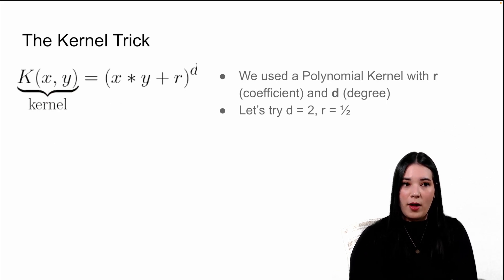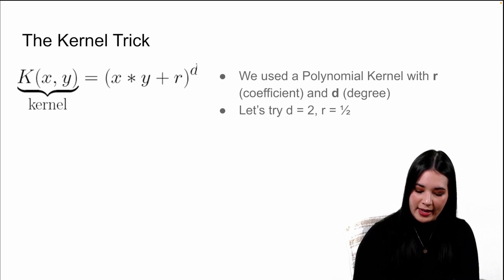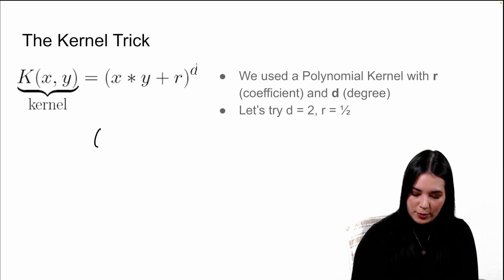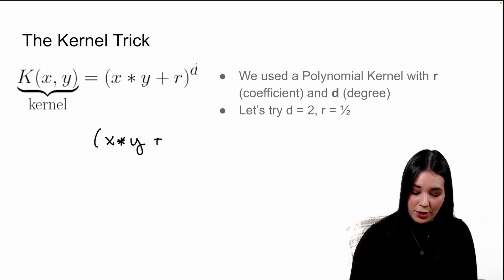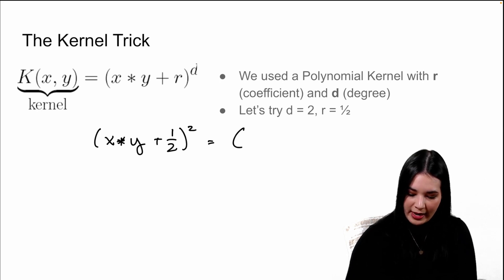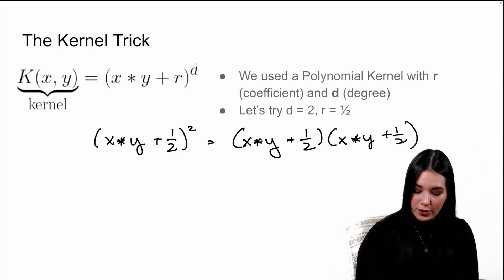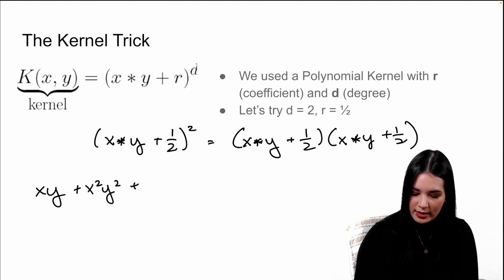In the chicken fingers example, I used a polynomial kernel with d (degree) equals 2 and a coefficient equals one half. Plugging that in, we get that the kernel between two data points x and y is equal to x times y plus our coefficient one half, to the second power. If we expand that out, we get x times y plus one half, times x times y plus one half. Expanding that out further, we get xy plus x squared y squared plus one quarter.